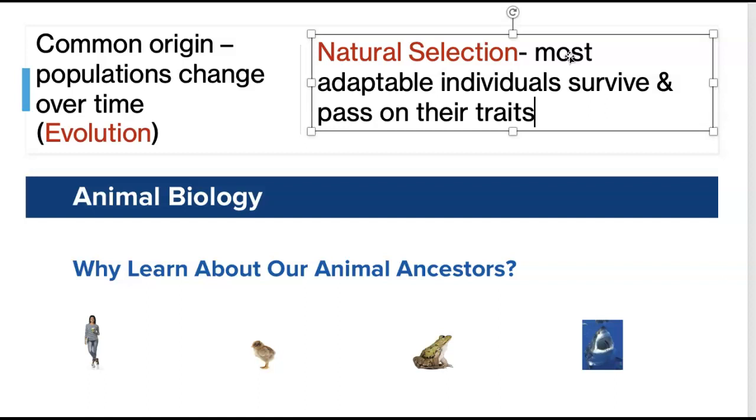Whichever individuals have traits that enable them to survive, those are more likely to reproduce because, well, they're alive. So then they pass on those genetics. And that makes their children typically more adaptable. And their children have traits. And then their children pass those traits on to grandchildren.